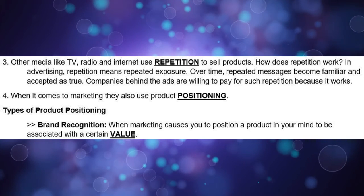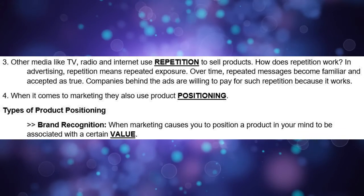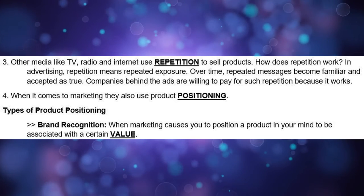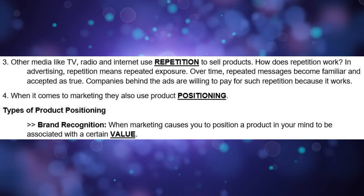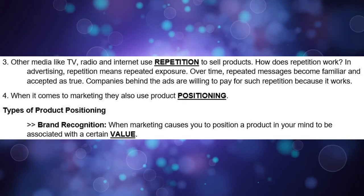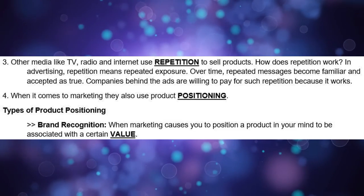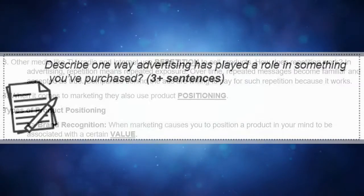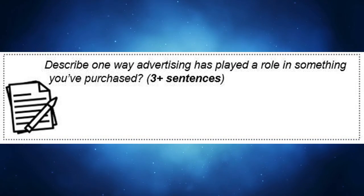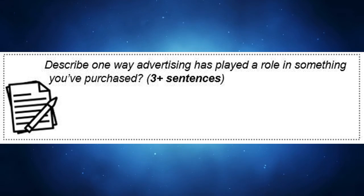The fourth technique is product positioning. Types of product positioning include brand recognition — when marketing causes you to position a product in your mind to be associated with a certain value. Journal: describe one way advertising has played a role in something you've purchased. Write three or more sentences to address this prompt.